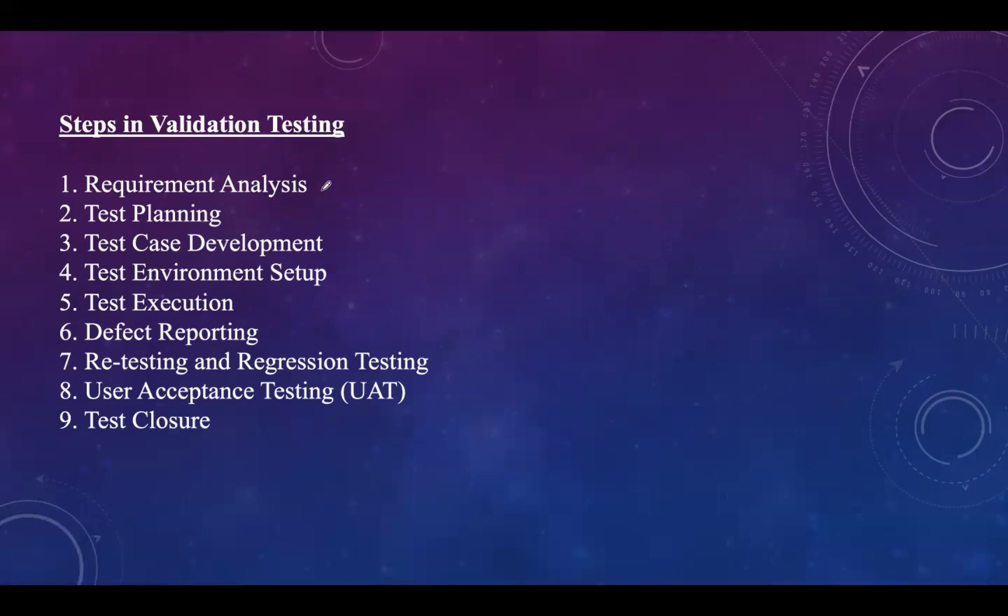These are the steps in validation testing. First is requirement analysis, where we review and understand user requirements and all the specifications, and also define acceptance criteria based on the requirements provided by the user. In test planning, developers create a validation test plan outlining objectives, resources, timelines, and responsibilities, and also identify the types of testing to be performed, like user acceptance testing, functional testing, or performance testing.